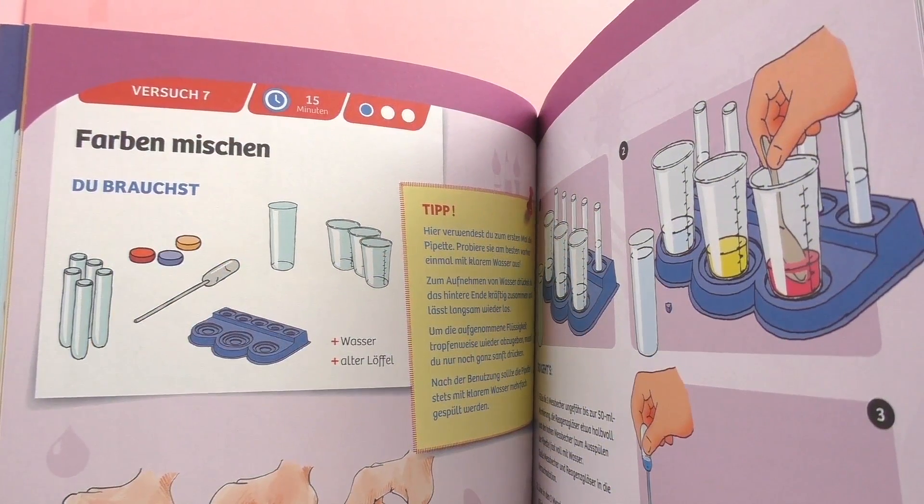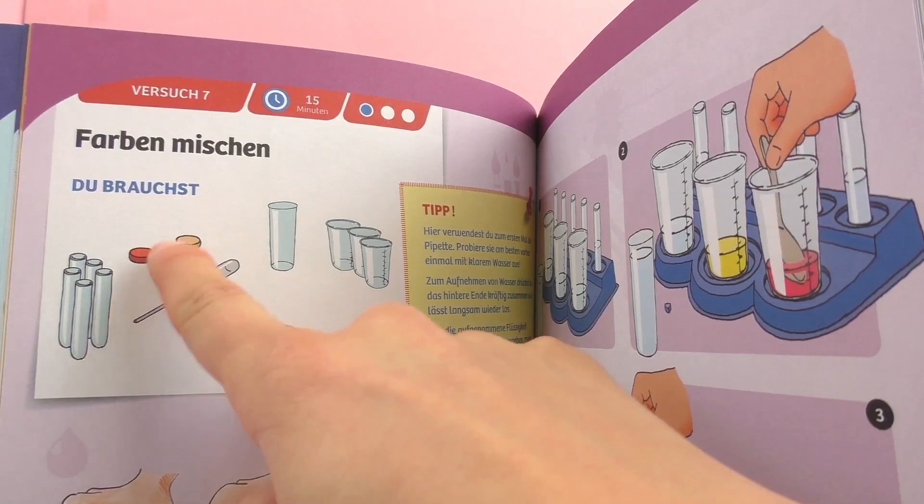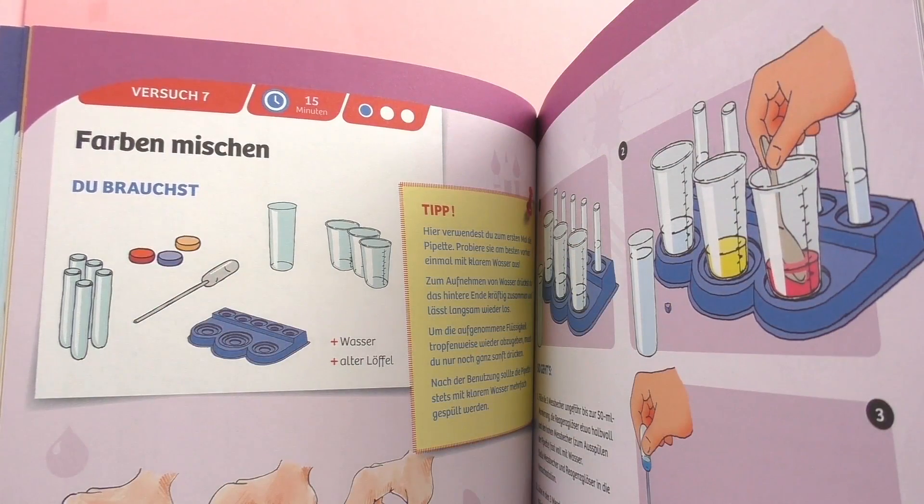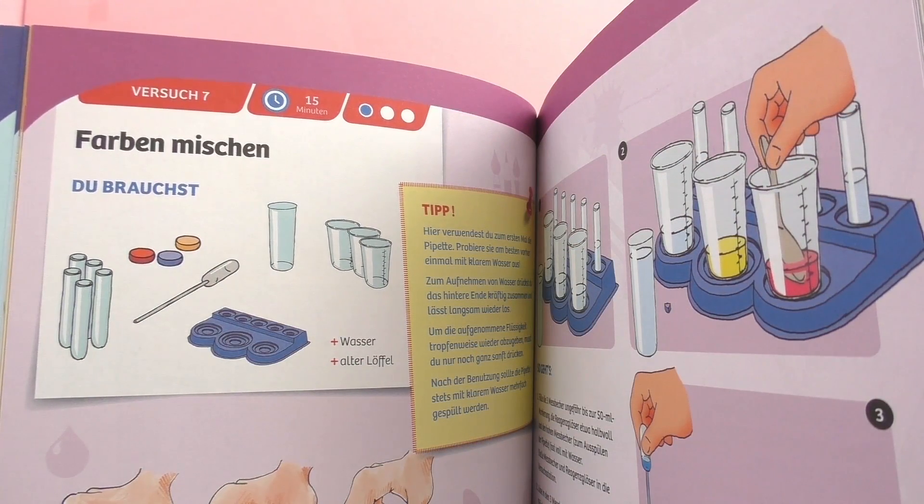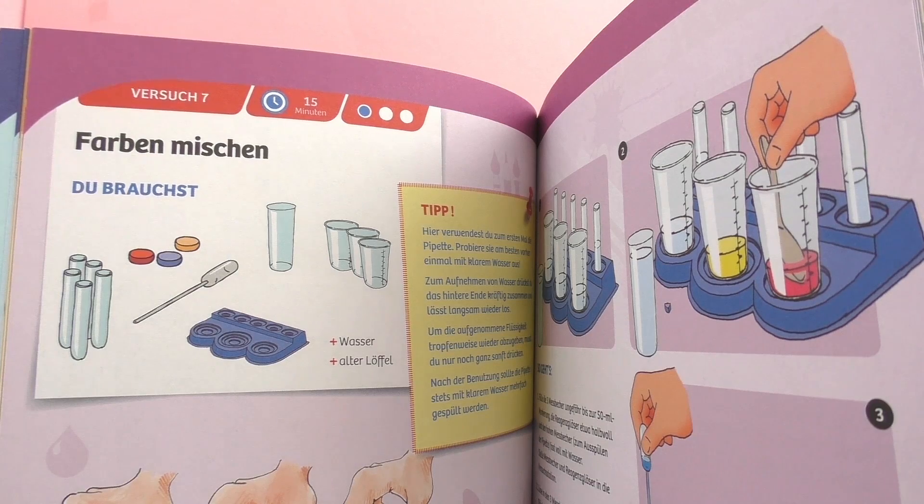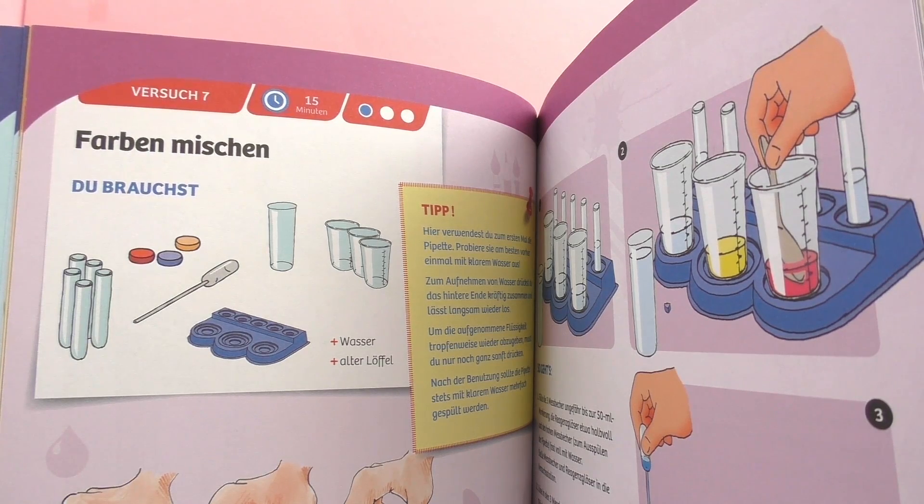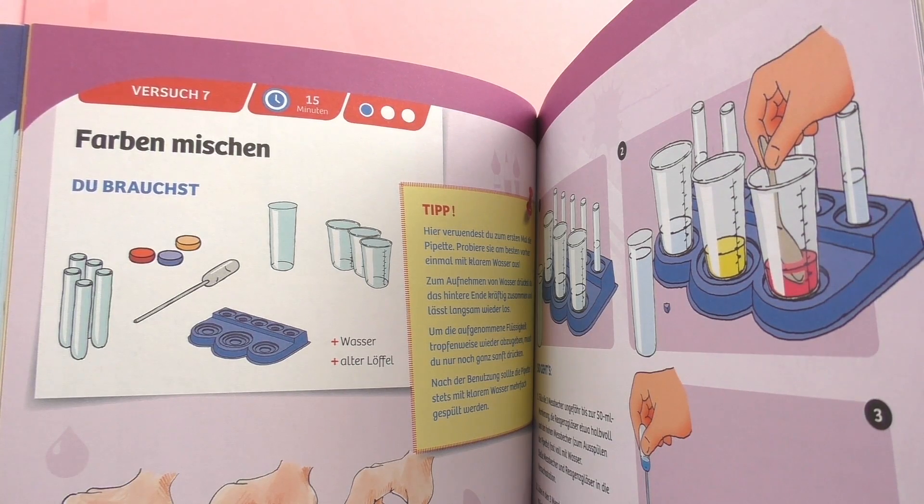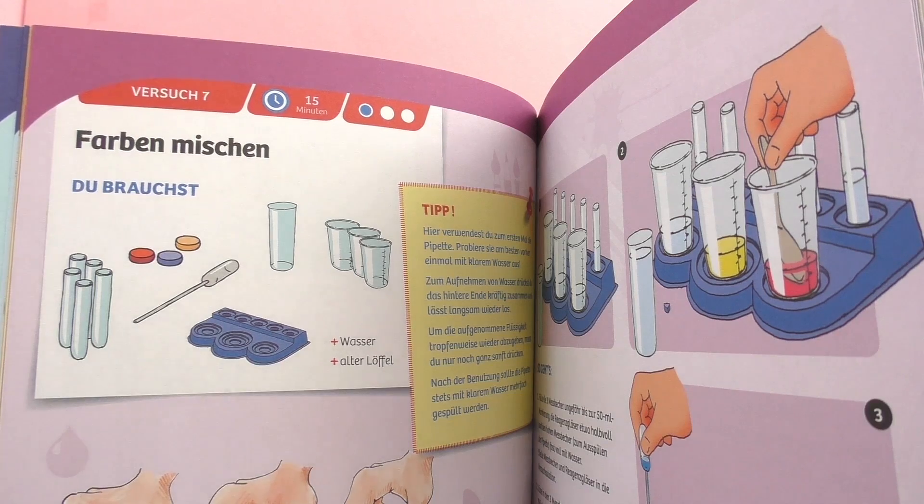I've chosen a special experiment called mixing colors and we're going to be using three different colors: red, blue, and yellow to make new colors. You can do this at home on your own if you would like. You don't need the set, you can substitute the color pellets for food dye.